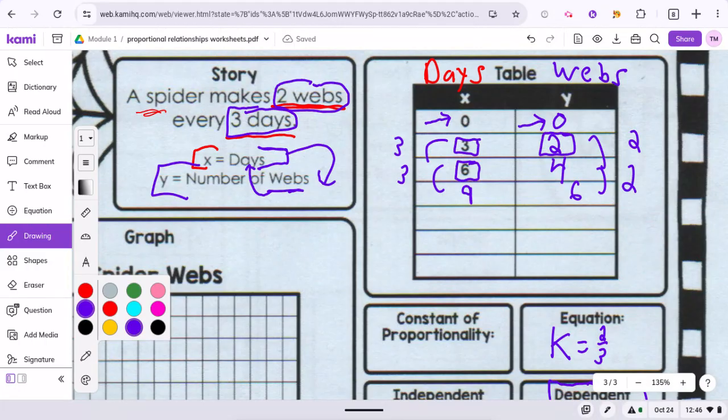And then if you went three more days, you're keeping the same rate or ratio here, three to six. You're going three more days. You would go two more webs.